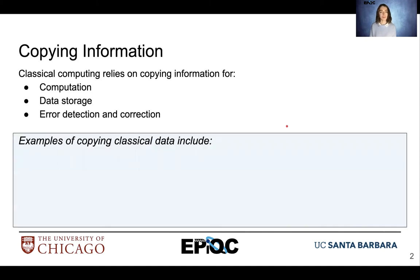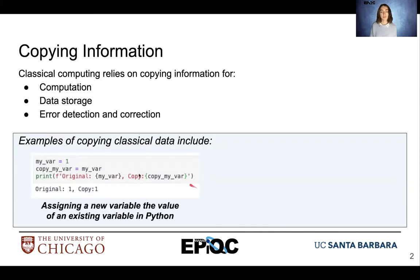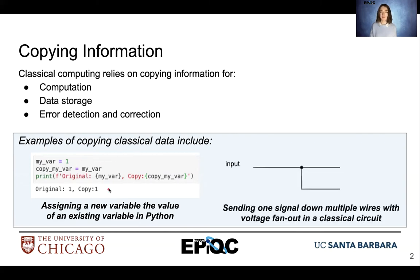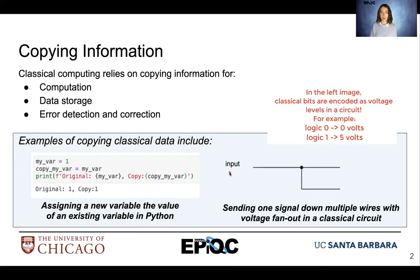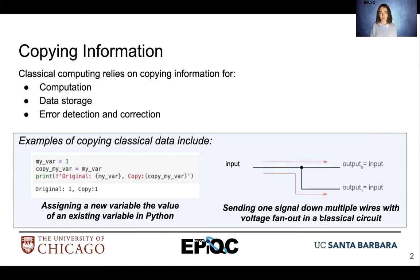Here are some examples of copying classical data. Here we have a variable and we create a new variable that is assigned to the value of this first variable, myvar. We can see that they both are equivalent. Another example is taking a signal that encodes data and splitting it so that it passes to two different wires — sending one signal down multiple wires using voltage fanout, which is often done in classical circuits, allowing the output terminals to be equivalent to the single input terminal.